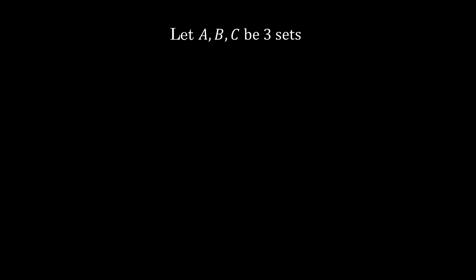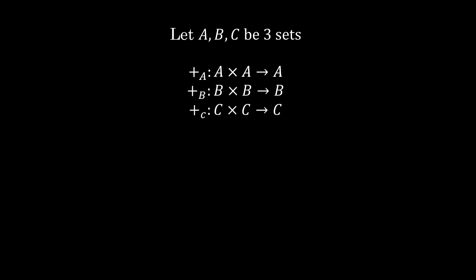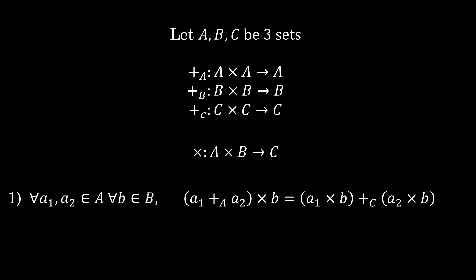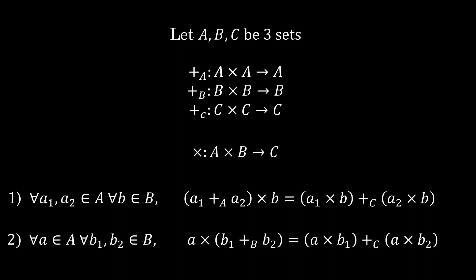Let's say we have three sets — not necessarily different — A, B, and C. For each set, we can define an operation we would call addition. And now we can create an operation of multiplication that takes one element from A, another from B, and returns an element from C.